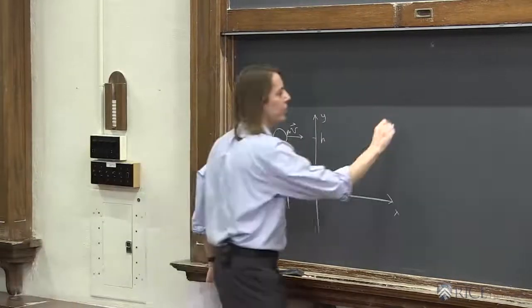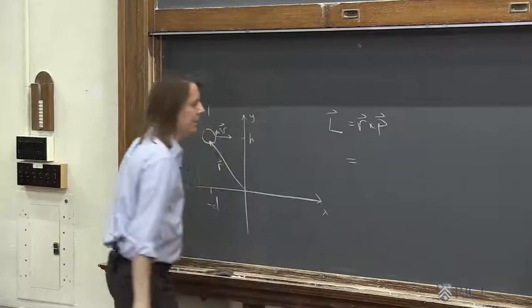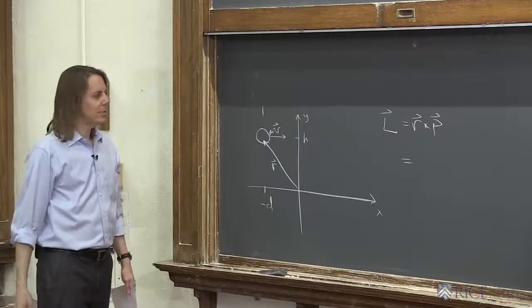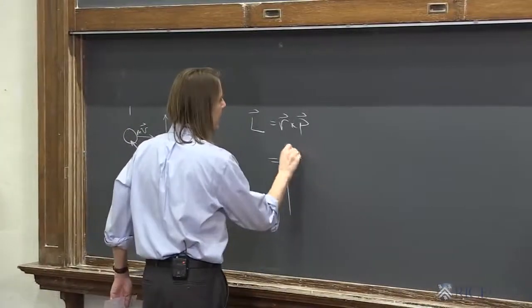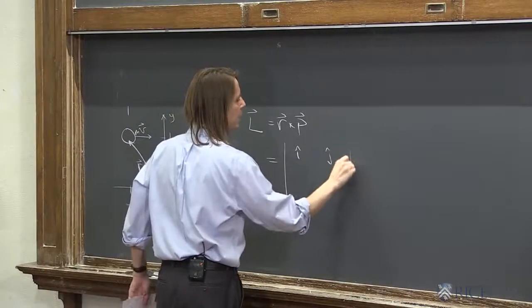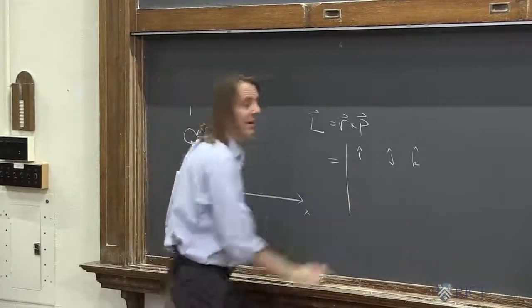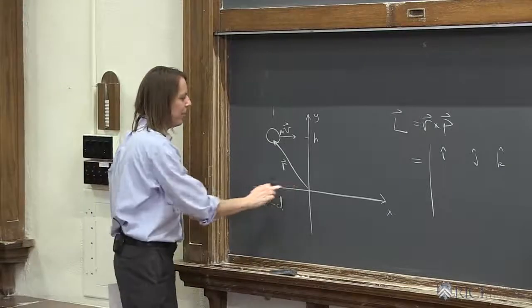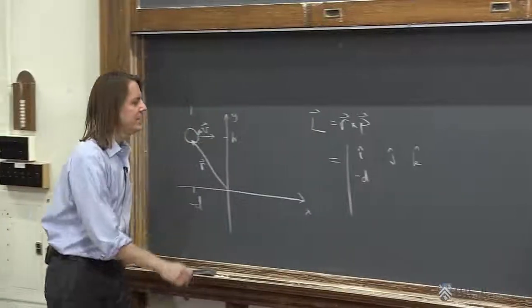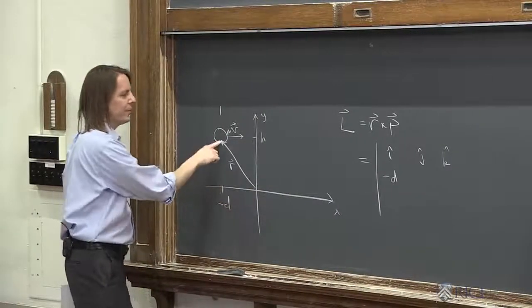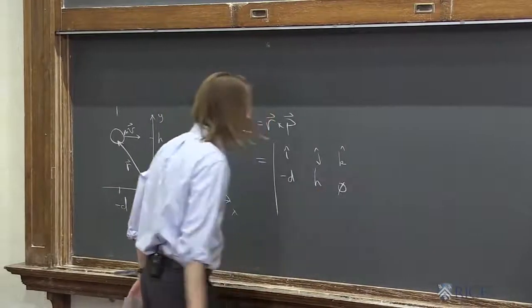So all we know is that l is r cross p. I prefer the determinant way. Because that helps you get rid of a lot of zeros really fast. So let's do the determinant way. i hat. j hat. k hat. R. I'm just writing the r vector. i hat. j hat. k hat. What is the x component of the r vector? Minus d. What is the y component, the j hat component of the r vector? h. What is the k hat component of the r vector? Zero.